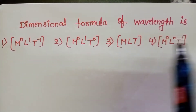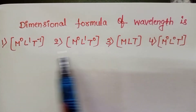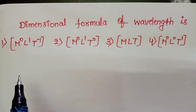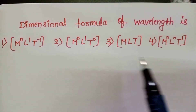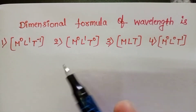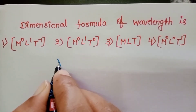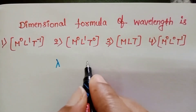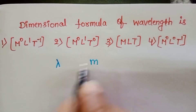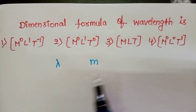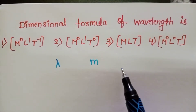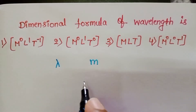The dimensional formula of wavelength. Generally, we can write the dimensional formula either by using its formula or unit. Wavelength is denoted with the letter lambda, and the SI unit of wavelength is meter. So, wavelength has the dimension of length only.